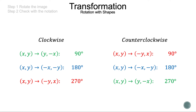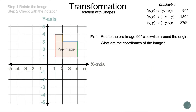Now let's take a look at Example 1. Step one: rotate the image. Step two: check with the notation. The question asks us to rotate the pre-image 90 degrees clockwise around the origin. On the graph we have the pre-image; we'll overlap it with our image and rotate it 90 degrees clockwise — one quarter turn to the right. We'll highlight the origin with a yellow circle to help with the rotation.